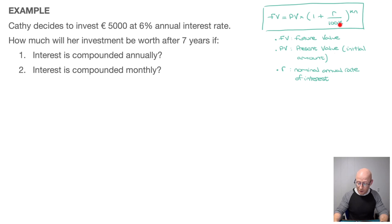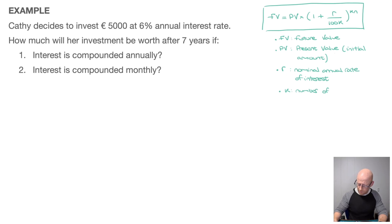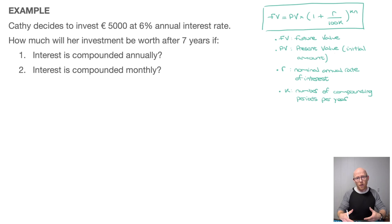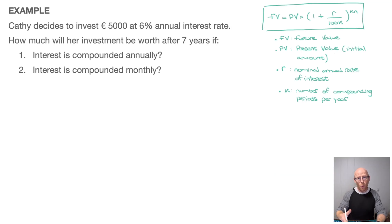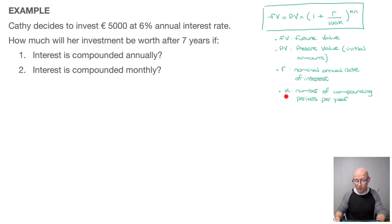K appears on the denominator as well as in the exponent. K tells us the number of compounding periods per year — in other words, how many times per year we earn interest on our investment. If interest is compounded annually, K equals 1. If compounded quarterly, K equals 4. And as we'll see in this example, if compounded monthly, K equals 12.